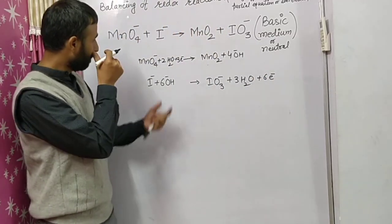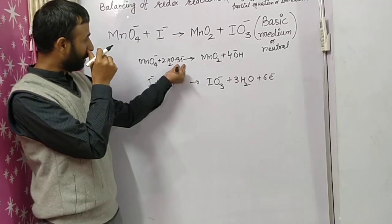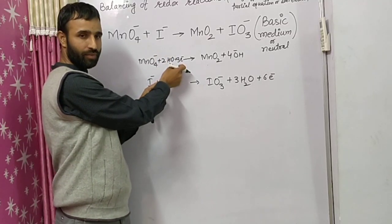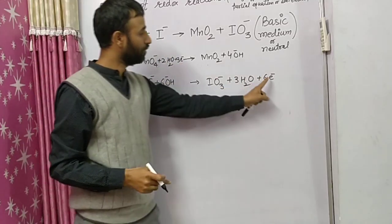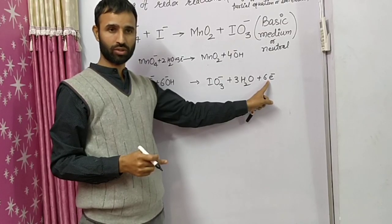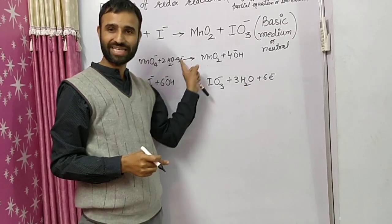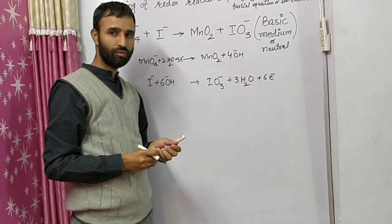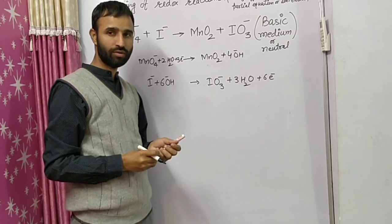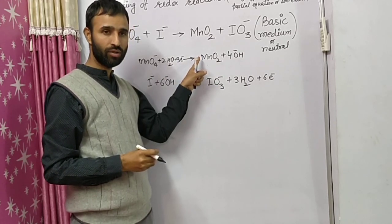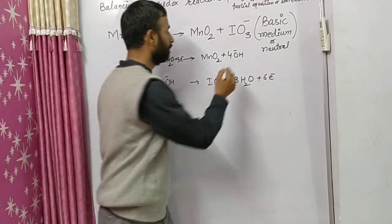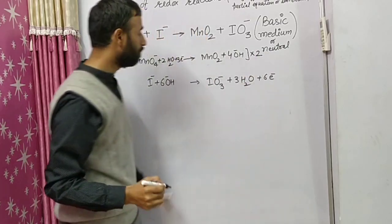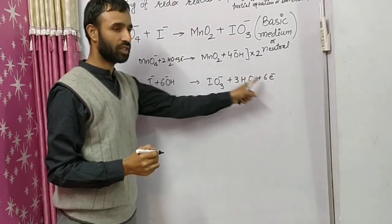Since the first half-reaction gains three electrons and the second requires six electrons, we multiply the first equation by two to balance the electron transfer. This gives us six electrons on both sides.